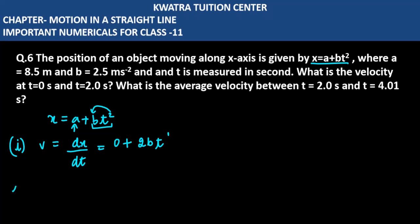At t equals 0, we have to take the velocity. If we place 0 here, then 2 into b into 0, which is 0 meter per second.